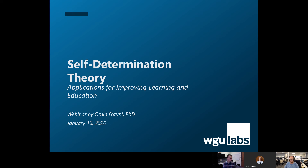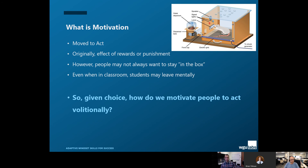Self-determination theory is probably one of the most robust theories of motivation, especially as it relates to learning. Let's spend some time going through what the theory is and think about practical applications for education, learning, perhaps online learning versus traditional classrooms, and consider how this can be applied or what some of the limitations are around this theory and its practice.